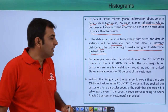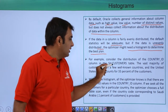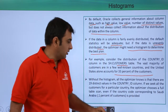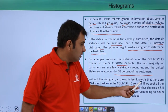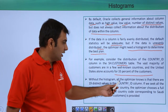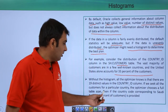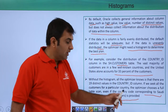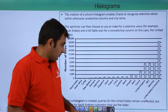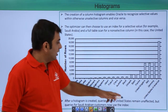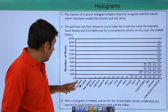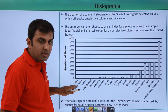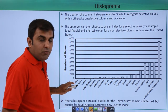Let us see this with an example. The distribution of the country ID column in the customer table shows a vast majority of customers in a few well-known countries - the United States alone accounts for 33 percent of the customers. Without the Histogram, all the optimizer knows is that there are 19 distinct values in the country ID column. If we query all customers for a particular country, the optimizer chooses a full table scan even if the country code for Saudi Arabia is provided.